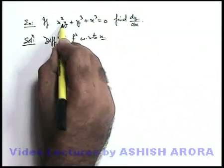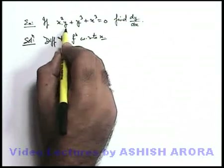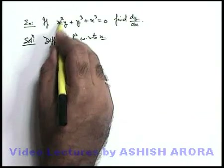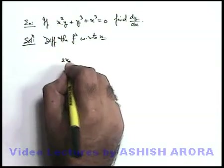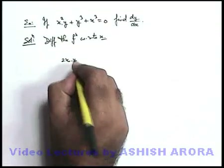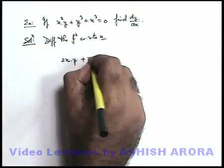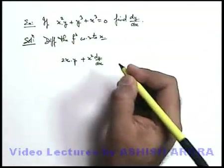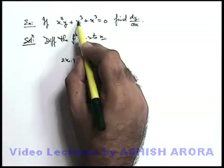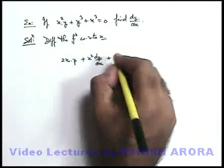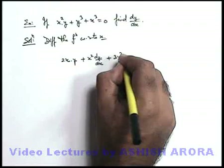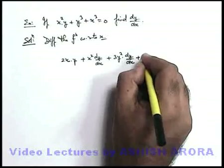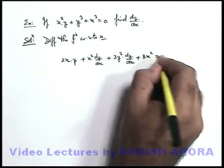We directly differentiate this function with respect to x. The first term is x² into y, which can be differentiated using the product rule. Differentiating the first function gives two x, and we keep y as it is, plus we keep x² as it is and differentiate y, giving dy/dx. Then we differentiate y³ with respect to x, which gives three y² times dy/dx, plus differentiation of x³ with respect to x is three x². This is equal to zero.